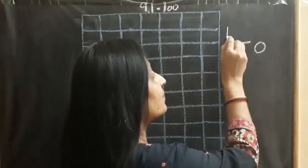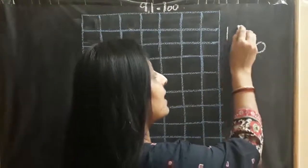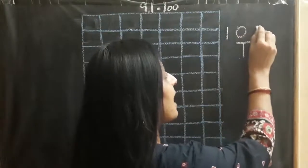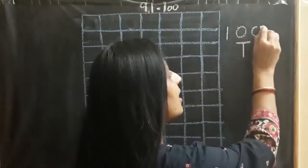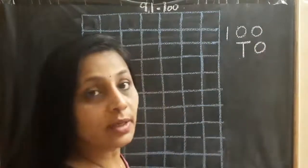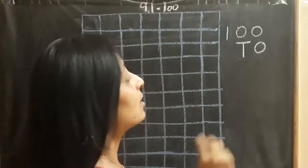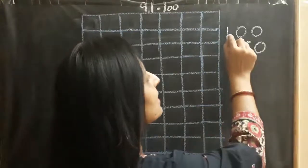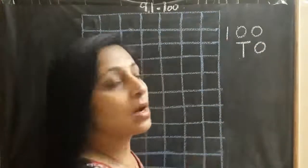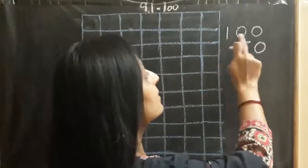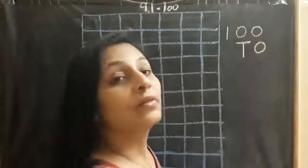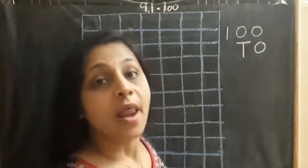Now, after 99, we will be having 100. As you can see, we have three numbers: 1, 0, 0 — three numbers.